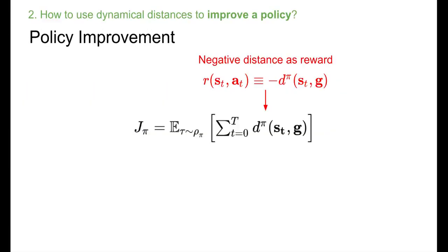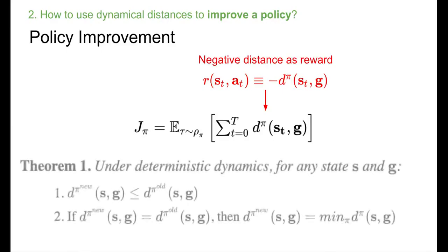Let's then discuss how we can use the learned distance to improve our policy. The objective we use is very similar to the standard reinforcement learning objective, the only difference being that we replace the reward function with the negative distance. This means that DDL can be applied to any standard reinforcement learning algorithm.